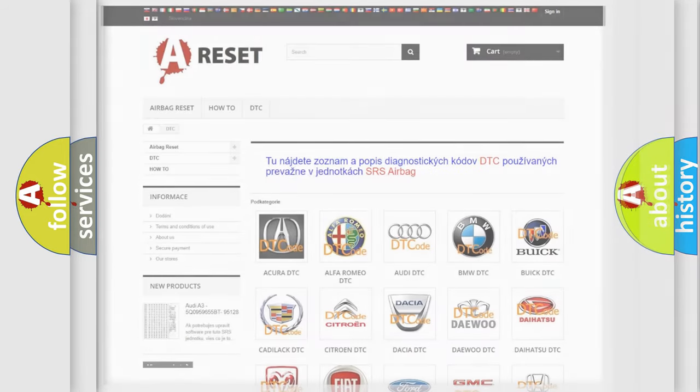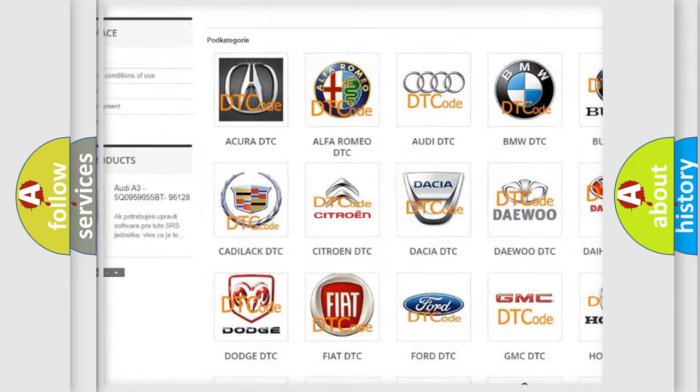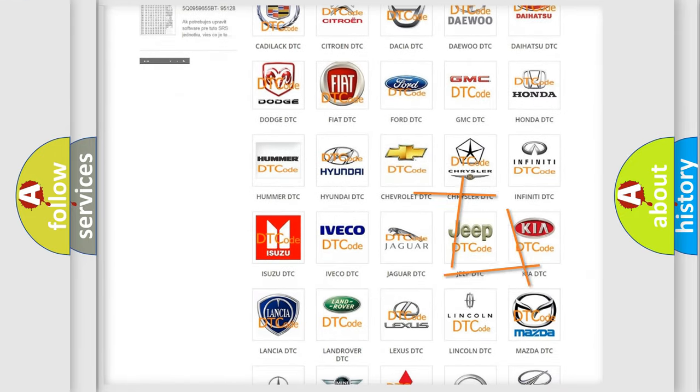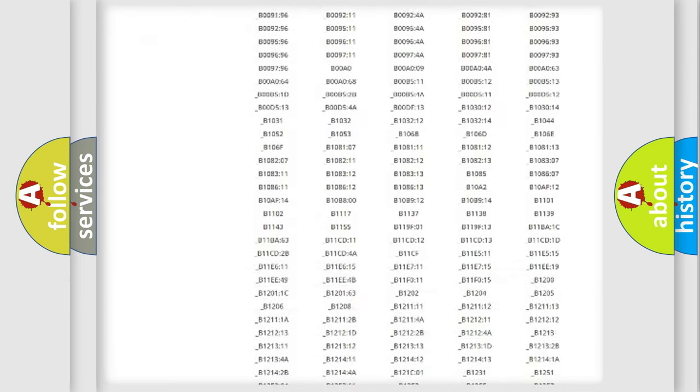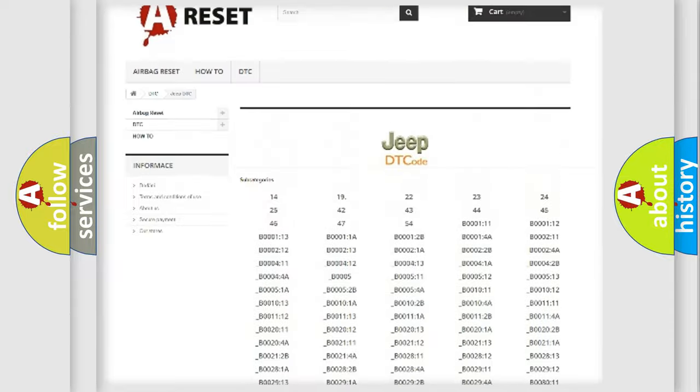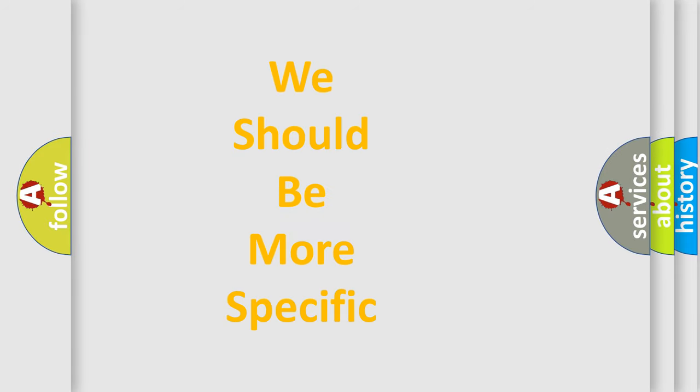Our website airbagreset.sk produces useful videos for you. You do not have to go through the OBD2 protocol anymore to know how to troubleshoot any car breakdown. You will find all the diagnostic codes that can be diagnosed in Jeep vehicles, and many other useful things. The following demonstration will help you look into the world of software for car control units.